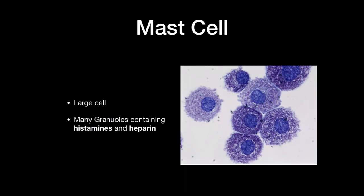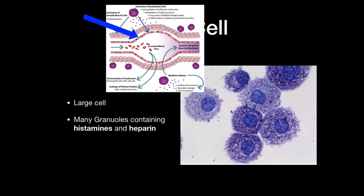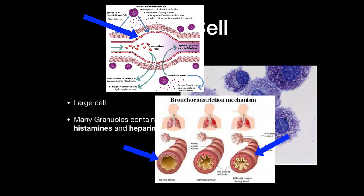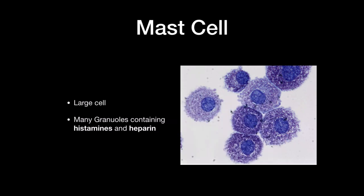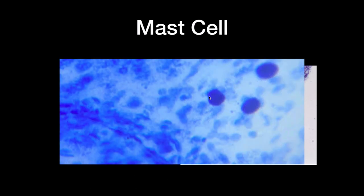Mast cells are large cells with many granules in the cytoplasm containing histamine and heparin. When a mast cell is triggered by an antigen, histamine is secreted, increasing capillary permeability so cells can enter the inflammatory area, and the mast cell also contracts the bronchioles. Histamines are a major reason for allergies — they cause inflammation when exposed to antigens of an allergen. The allergy pills you take are usually antihistamines. Under the microscope, mast cells can appear very dark due to their many granules.